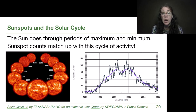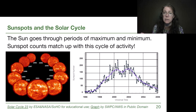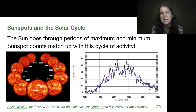There are periods of time where this is more likely to happen — more space weather events — and that's called solar maximum, and times where there's less likely to have events, and that's solar minimum.